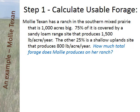I'm going to give you an example I call Molly Texan. Molly bought a ranch in the panhandle of Texas — that's in the southern mixed plains. It's a thousand acres. Seventy-five percent of it is covered with a sandy loam range site that produces fifteen hundred pounds per acre, and twenty-five percent is covered by a range site called the upland shallow site that produces eight hundred pounds per acre. So with this information, how much total forage does Molly have on her ranch?